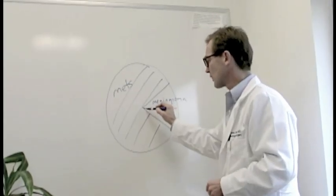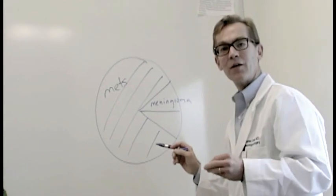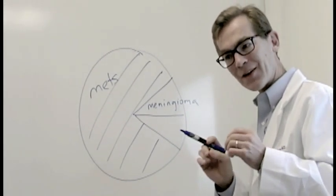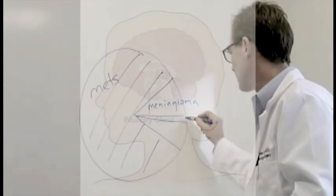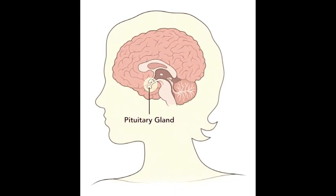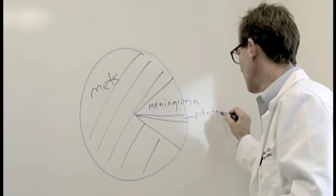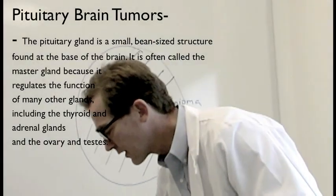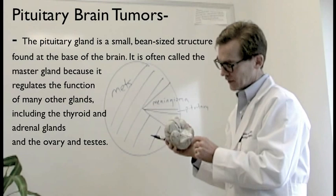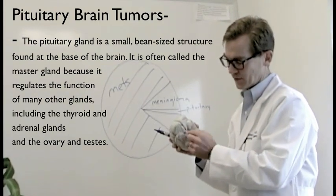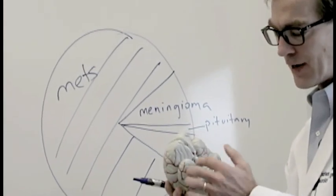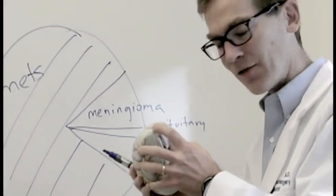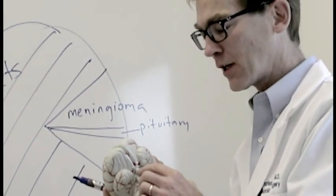Then there are tumors that arise from organ systems within the brain that are actually not the brain tissue itself, like pituitary tumors. Pituitary is a gland, and if I use my brain model, a gland that sits at the base of the brain. That little white spot right there, this little organ sits at the base of the brain. It's not really in the brain itself, and tumors can arise from the pituitary gland.